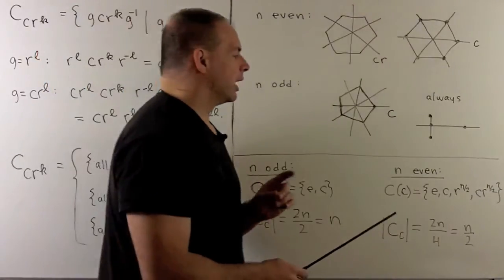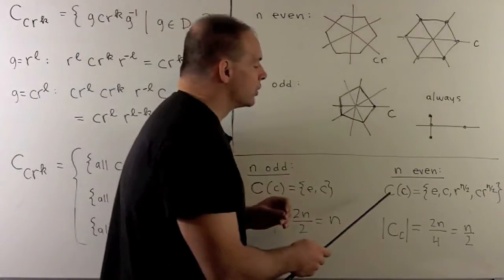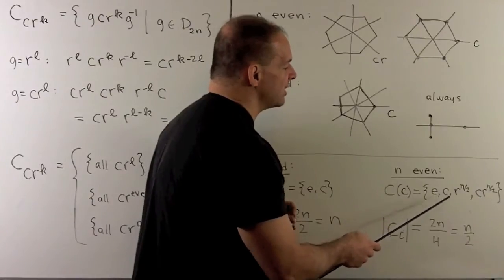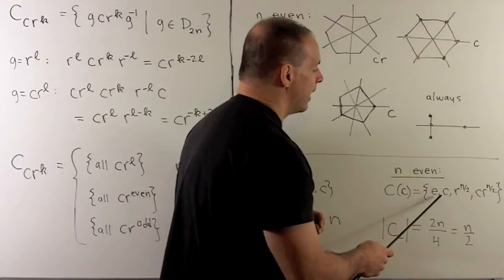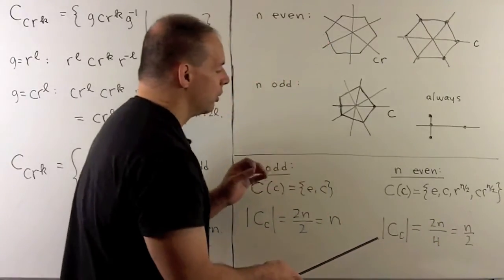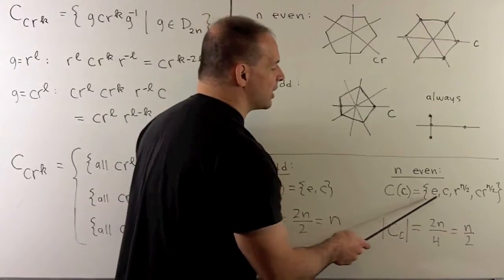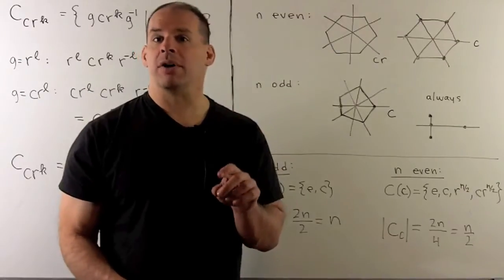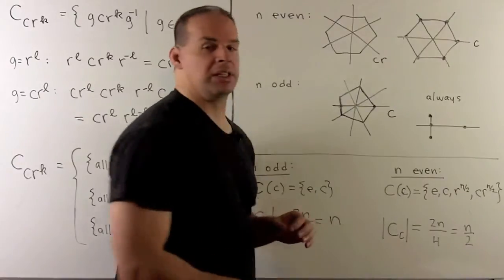When n is even, now we're going to have a center to deal with. We take centralizer of c: identity element, c itself, the element from the center r to the n over 2, and then the product c r to the n over 2. We use the cardinality rule. We have the order of the group is 2n, divide by the order of the centralizer which is 4, and I get n over 2. That's one half of our split. You can check for centralizer of c r to get the other one.